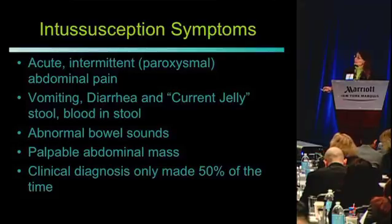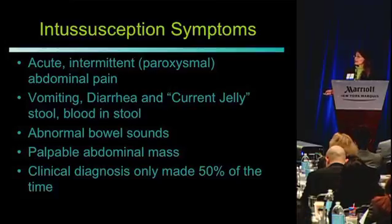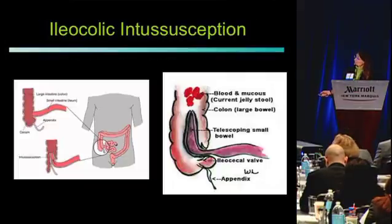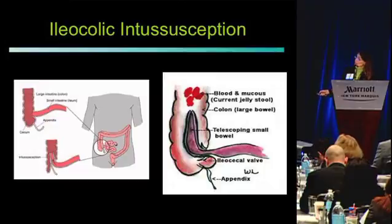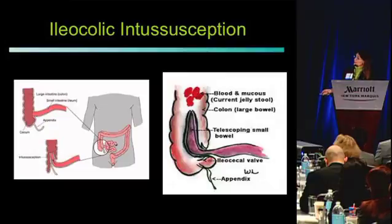How do these babies present? Paroxysmal abdominal pain, vomiting, diarrhea, and currant jelly stool. On physical exam they may have abnormal bowel sounds and an abdominal mass. On diagram, an ileocolic intussusception shows the ileum — the last part of the small bowel — telescoping backwards up into the colon. This is a relatively common pediatric problem.